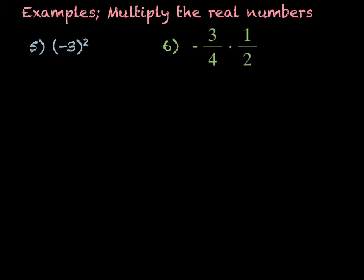These next examples, we're going to multiply real numbers. When multiplying, remember: if there's an even number of negative signs the answer is positive; if there's an odd number of negative signs the answer is negative. This first one is negative 3 squared, which means negative 3 times negative 3. That's a double negative, so it's going to be a positive 9. That's my final answer: 9.